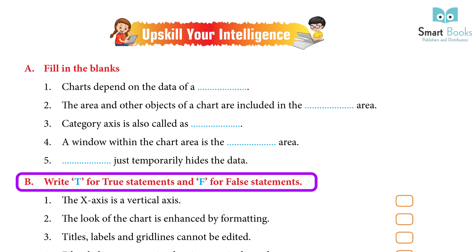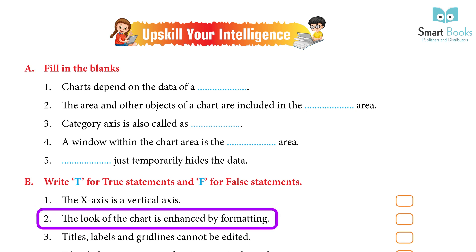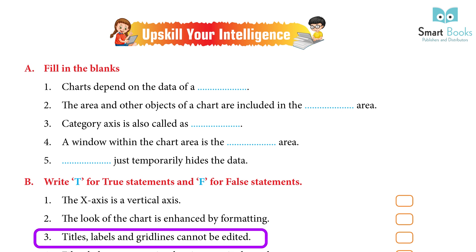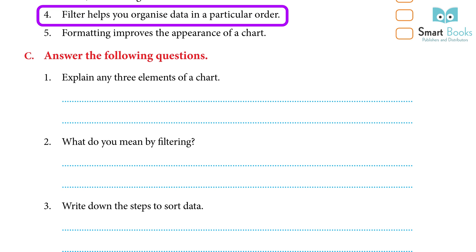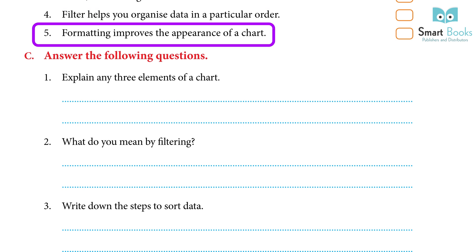B. Write T for true statements and F for false statements: 1. The X-axis is a vertical axis. Answer: False. 2. The look of the chart is enhanced by formatting. Answer: True. 3. Titles, labels, and grid lines cannot be edited. Answer: False. 4. Filter helps you organize data in a particular order. Answer: False. 5. Formatting improves the appearance of a chart. Answer: True.